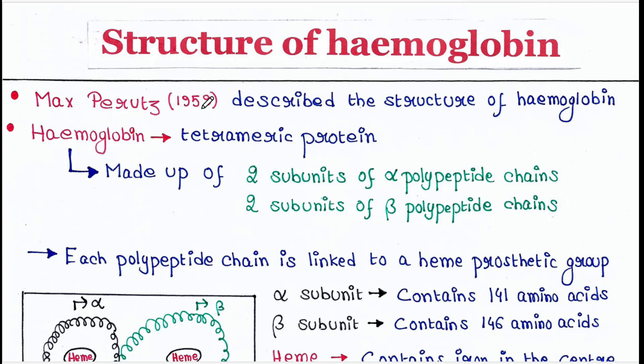Max Perutz in 1959 described the structure of hemoglobin. Hemoglobin is basically a protein, and it is a tetrameric protein, that means it has four subunits.